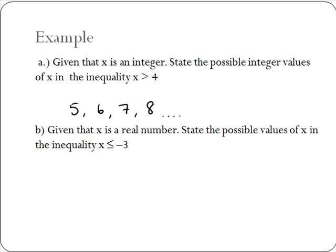In part B, given that x is a real number, we're asked to state the possible values of x in the inequality x is less than or equal to minus 3. Remember, real numbers include all the numbers. So in this inequality, x is less than or equal to minus 3. If we put minus 3 or any number less than minus 3 — it could be minus 3.1, minus 3.111, or minus 4 — into our inequality in place of x, it will remain true. Because there are many possible solutions, we often represent them using number lines.